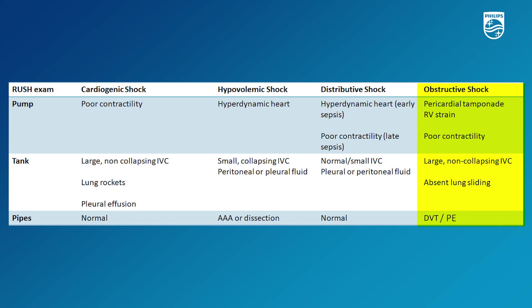Finally, with obstructive shock — if this is due to a tension pneumothorax, you would see evidence on your lung windows with a large pneumothorax and hypotension present. If due to a pulmonary embolism, you may notice the presence of clots especially on your parasternal short axis view of the right ventricular outflow tract, or the right ventricle may appear enlarged. The other cause of obstructive shock is pericardial tamponade, where you may notice diastolic collapse of the right ventricle.